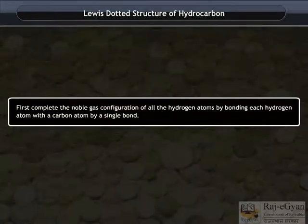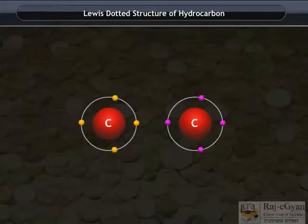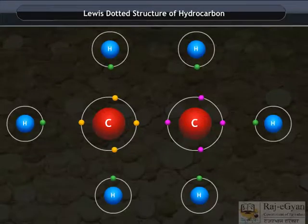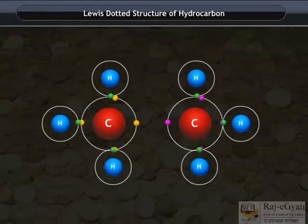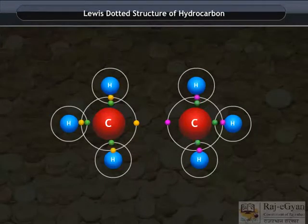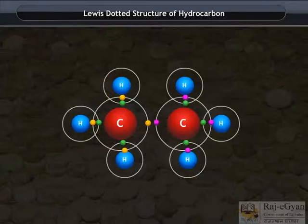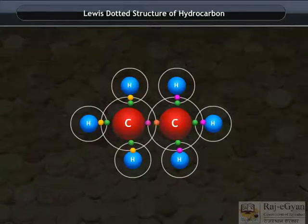First, complete the noble gas configuration of all the hydrogen atoms by bonding each hydrogen atom with a carbon atom by a single bond. In ethane, 3 hydrogen atoms are shared with each carbon atom. The remaining valency is satisfied by sharing of carbon atoms to form a single bond.